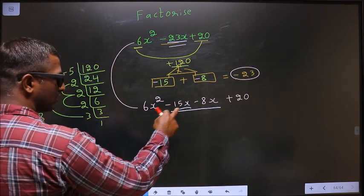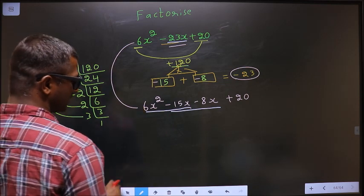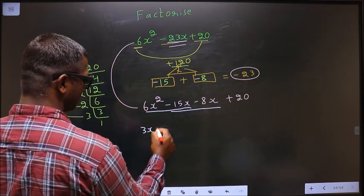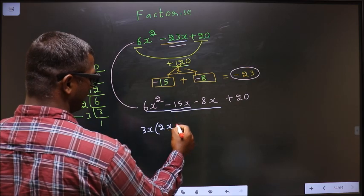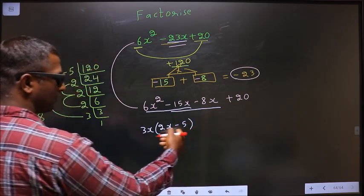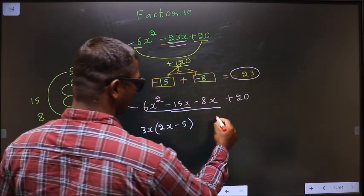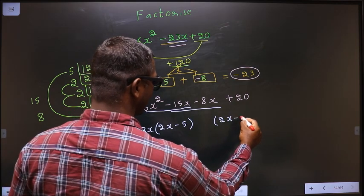Now, what can be taken out common from these two terms is 3x. So, here I get 2x and here I get 5. Whatever you got in this bracket, here also you should get the same thing.